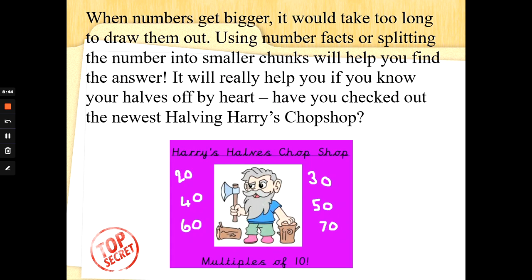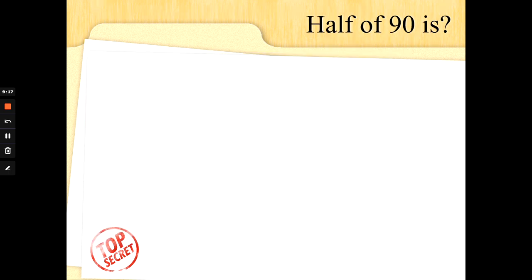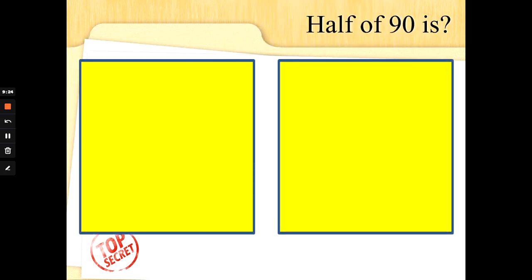When numbers get bigger, it will take too long to draw them out. Using number facts or splitting the number into smaller chunks will help you find the answer. It will really help you if you know your halves off by heart. That means without having to work them out, especially for bigger numbers. Have you checked out the newest Halving Harry's Chop Shop song? That will really help you. So, can you use what you already know? Do you know what half of 90 is? Now, Halving Harry tells you in the song, and you've not got time to draw this out. Okay, so we've got 9 lots of 10, 90. Now, if you don't know what half of 90 is, let's do it together. So, half is splitting it between 2.